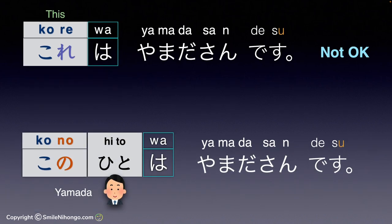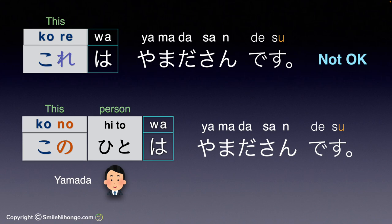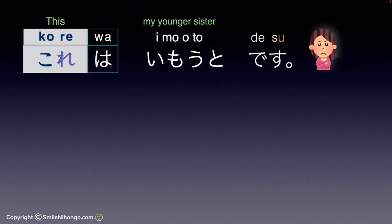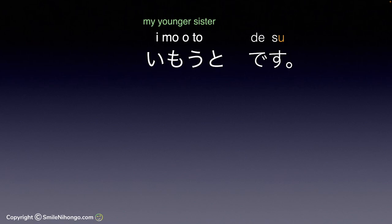Back to これ and この. The only situation that is somewhat acceptable to use これ or even それ for people is when you refer to your family members or someone with whom you can be entirely casual. For instance, when introducing your younger sister, you can say これは妹です — though it doesn't necessarily sound nice. I have a younger sister but I would never use これ to refer to her. Instead, I usually just drop that part and say 妹です.